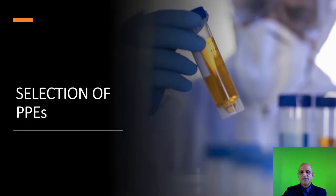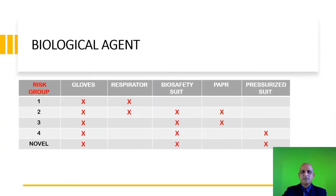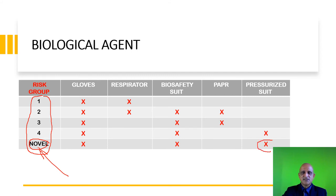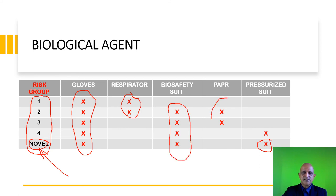We now move on to the selection of PPEs. The selection is based on risk assessment, considering the biological agent itself and the risk group to which it belongs. If the risk group is unknown or novel, we must utilize the highest level of protection, which involves the pressurized suit. The various risk groups and their associated PPEs are listed in a table. Respirators are used for risk groups 1 and 2. However, for higher risk groups, it is recommended that a biosafety suit and a PAPR be utilized in conjunction with each other.